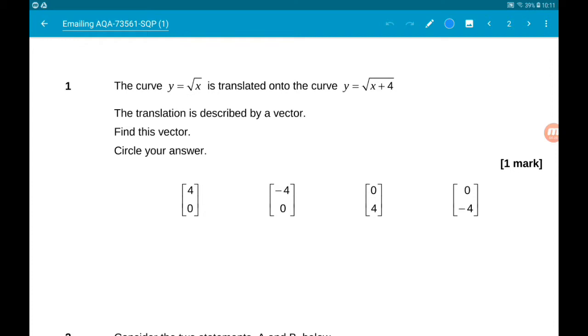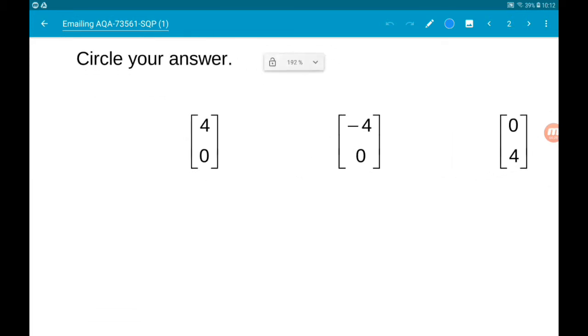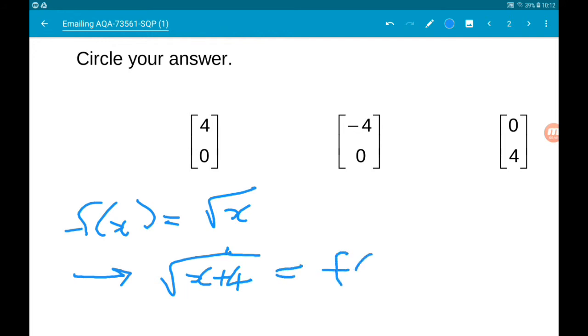The translation is described by a vector; we want to find that vector. Let's say f(x) = √x, and then √(x + 4) is f(x + 4).